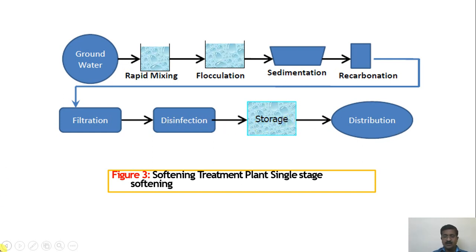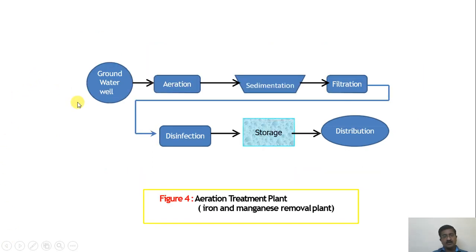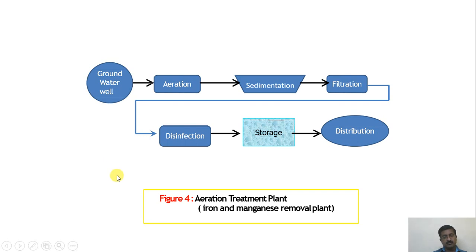Depending on which water source is used, the units in the flow diagram change accordingly. For a groundwater well used in a portable water treatment plant, the sequence is: aeration, sedimentation, filtration, disinfection, storage, and distribution. Aeration is sometimes provided very effectively to remove iron and manganese from the water source.